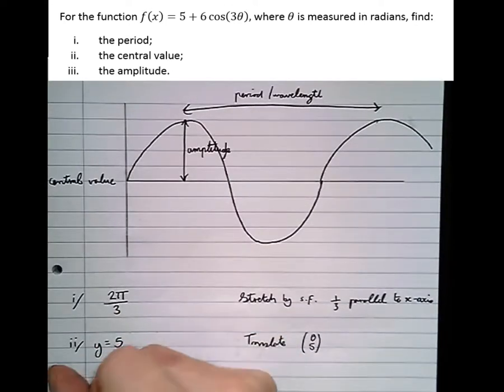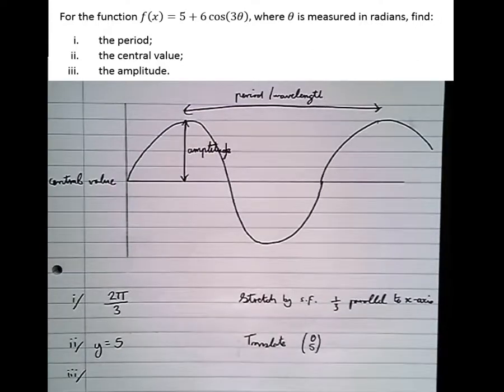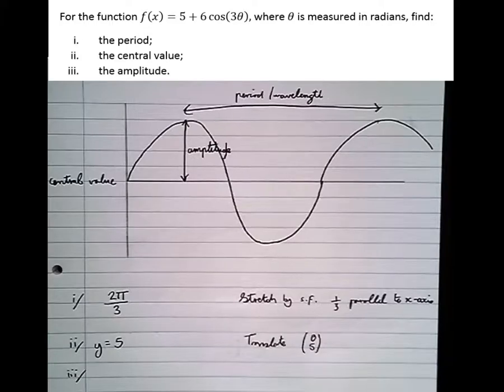Then part 3: The amplitude. Well the amplitude is the distance between the central value and the top. Normally that value is 1. Normally in an ordinary cosine or sine graph, the value of the amplitude is 1.